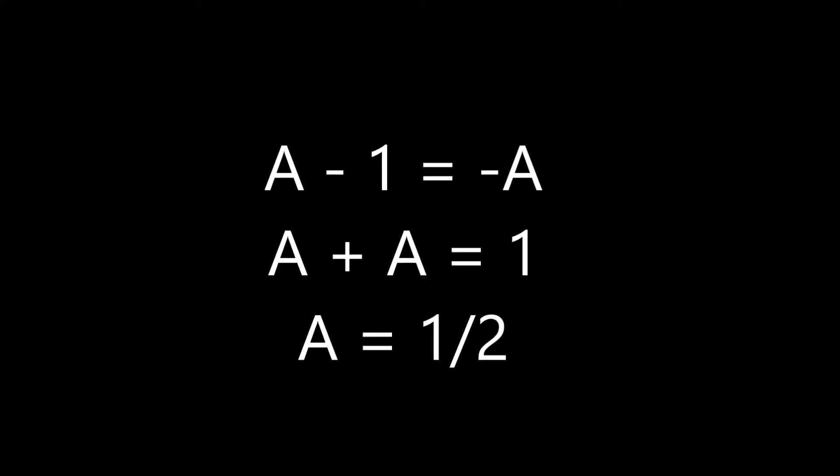So A minus 1 is equal to negative A, which yields A is equal to one half. Therefore, the sum of sequence A — 1 minus 1 plus 1 minus 1 plus 1 up to infinity — is equal to one half.